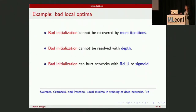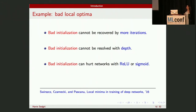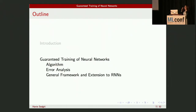They did extensive experiments and showed that if you start with a bad initialization and get stuck in bad local optima, it doesn't matter how many more iterations you do — you can't get out of it. And it doesn't matter even if you make your network deeper, or what activation function you use. They tried sigmoid, and it has the same problem. So I hope I've motivated you that local optima is a serious problem.